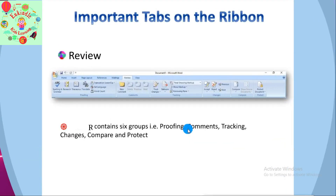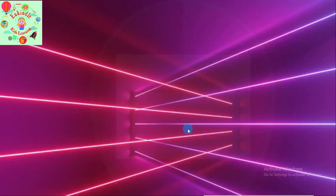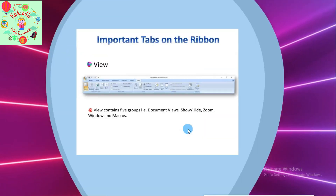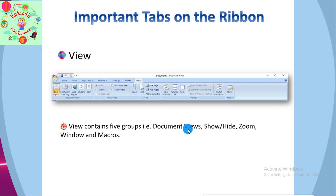The sixth tab is Review, with six groups: Proofing, Comments, Tracking, Changes, Compare, and Protect. The last tab is the View tab, with five groups: Document Views, Show or Hide, Zoom, Window, and Macros.